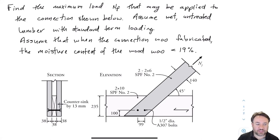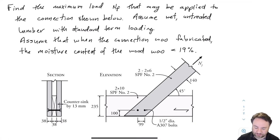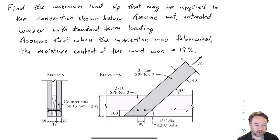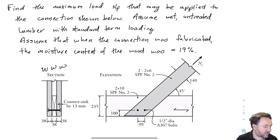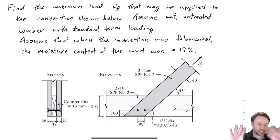Welcome back to Wood Engineering. I'm Jeff Orochko from Carleton University and in this video we are going to do a second check bolted connection example where this time we're looking at loads in both the parallel and perpendicular directions. The other difference compared to the last example is that in this connection all of the members are wood — a wood-wood-wood connection, as you can see from the section on the left — and so we're going to have to check both sides of the connection.